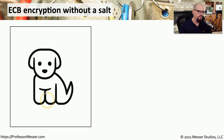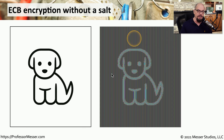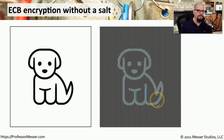Let's take an example where we have an image and perform an Electronic Code Book encryption of that image, taking one block at a time from this entire view. If there's no randomization or salt added to this encryption process, we would end up with output that looks just like this. Although the ciphertext is not identical to the original plaintext, it's still close enough that we could tell what the plaintext was originally. This is one of the reasons why Electronic Code Book may not be the best block cipher to use in all scenarios.